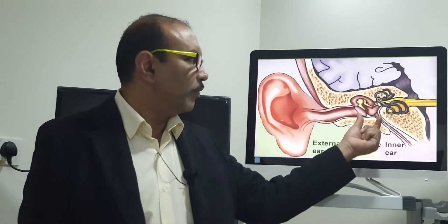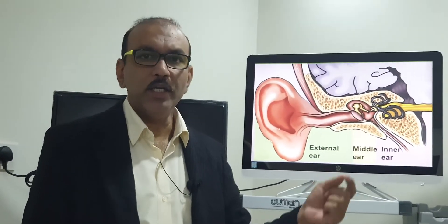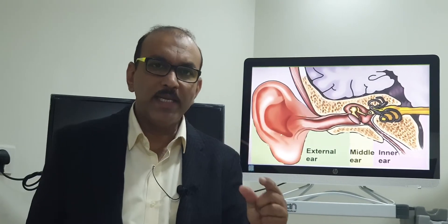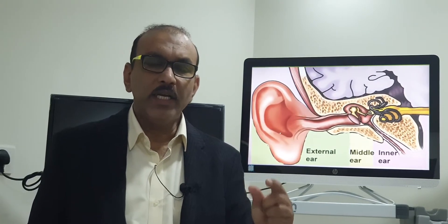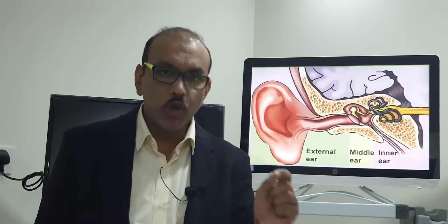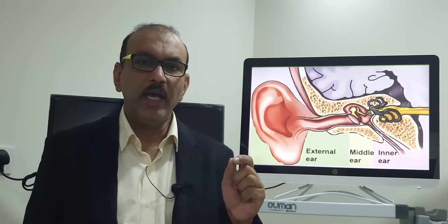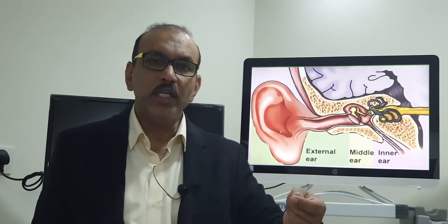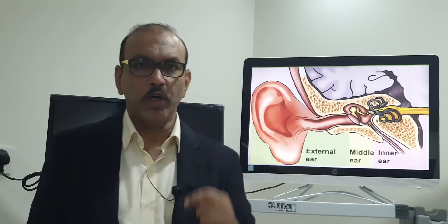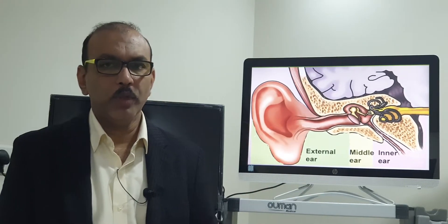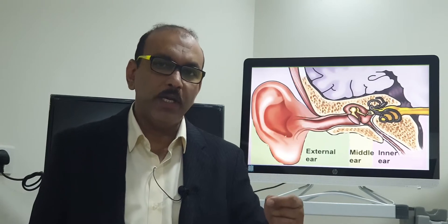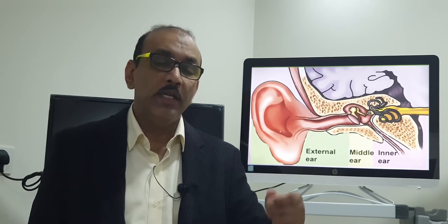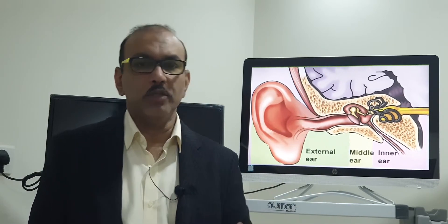Infection of the middle part is called otitis media. If the duration is less it is termed as acute otitis media, and when the infection lasts for more than three months it is called chronic otitis media. Complications of otitis media are seen more in acute otitis media.